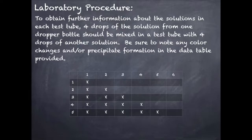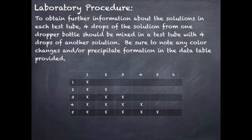Now I'm going to show you the procedure for actually doing the drops. The instructions tell you to take four drops of each solution and mix them in a test tube. For example, take four drops of solution one and add four drops of solution two to a small test tube. If you see a precipitate, mark it where one and two come together on your chart. If not, write 'no precipitate.'